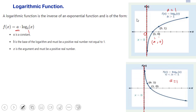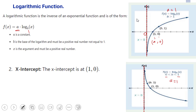When the base of the logarithm is greater than 1, similar to exponential, you have logarithm growth. When the base is between 0 and 1, you have logarithm decay. The x-intercept is at (a, 0).